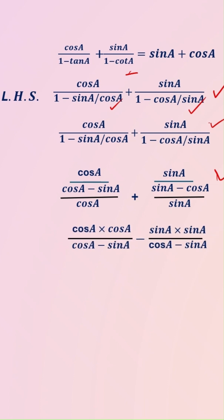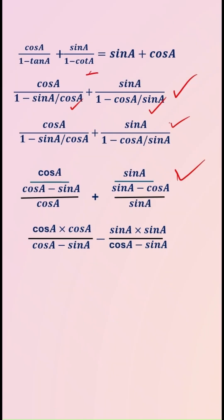You see here this will be multiplied here. Cos A multiplied by cos A divided by cos A minus sin A. Sin A multiplied by sin A divided by cos A minus sin A.